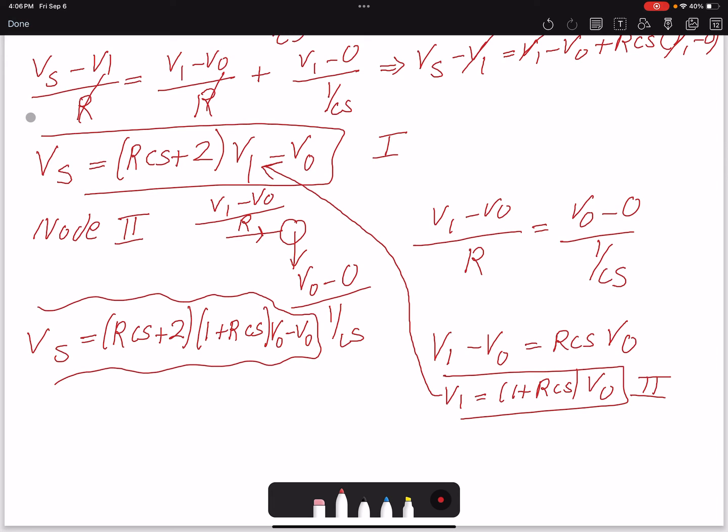And now I can write V0/Vs. That would be 1/(1 + 3RCs + C²R²s²), and that's my transfer function, the relation between the output and the input.